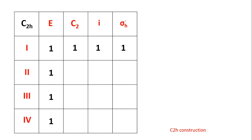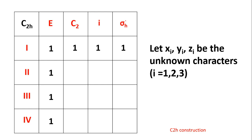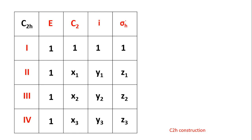Let all the remaining characters be represented by xi, yi, and zi, where i is 1, 2, or 3. That is, in the second irreducible representation: x1, y1, z1; third: x2, y2, z2; and fourth: x3, y3. Using the Great Orthogonality Theorem, the summation of gp times chi_i squared equals H, where chi_i is the character in the irreducible representation and gp is the number of operations in the particular class.